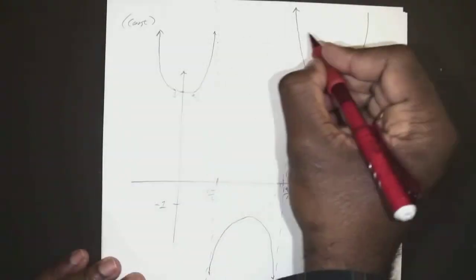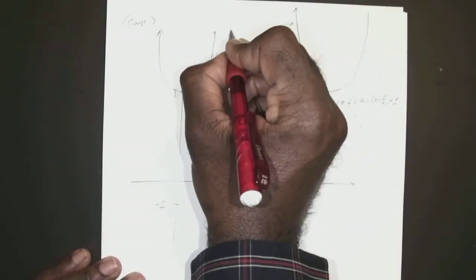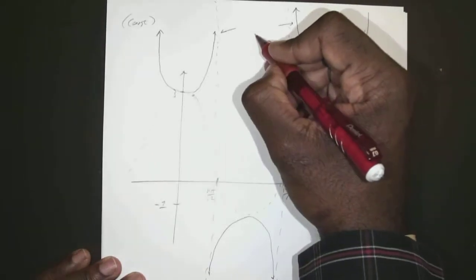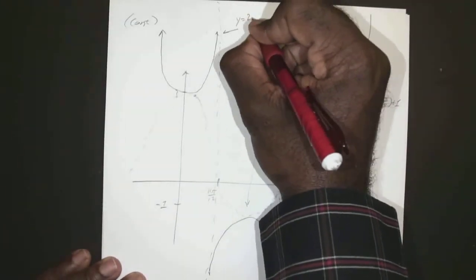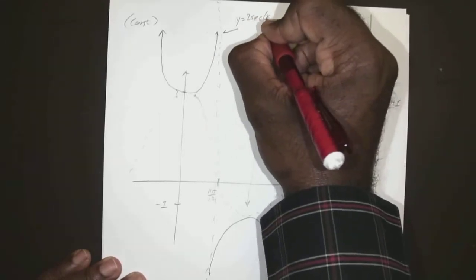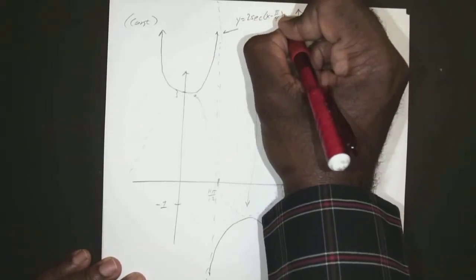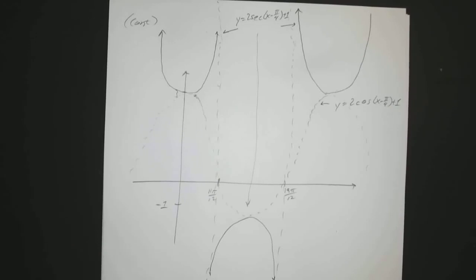So this is actually your graph of, and we'll say down to there, your y equals 2 secant of x minus pi over 4 plus 1.